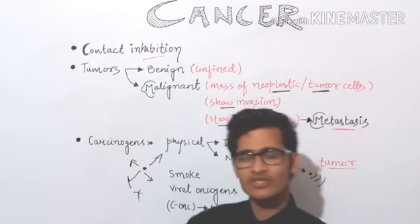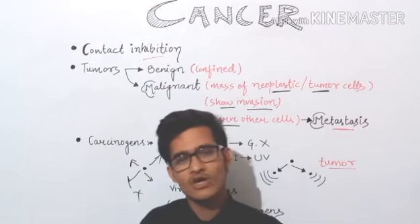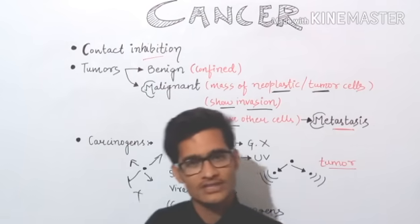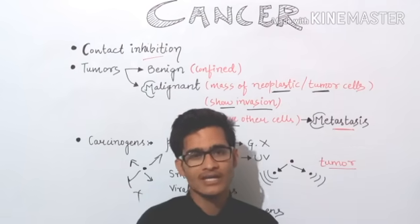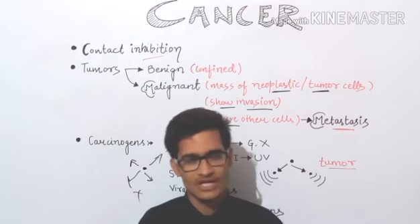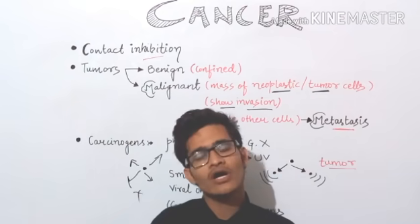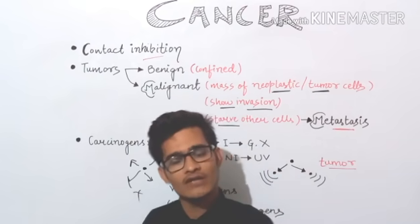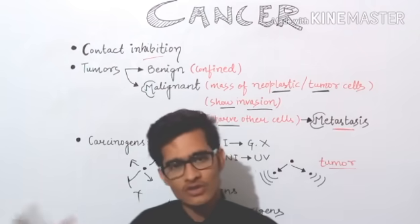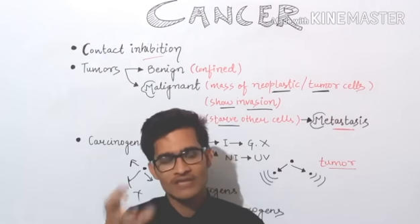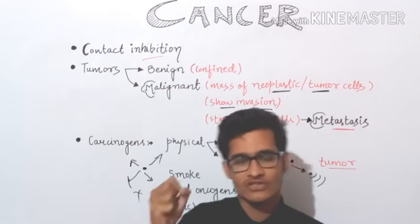In normal cells, there is a process called contact inhibition which is not found in cancerous cells. Because they do not follow the normal rules and regulations of cell division, they show uncontrolled proliferation. That's why they increase in number so greatly, forming a bunch of cells — that is known as a tumor.